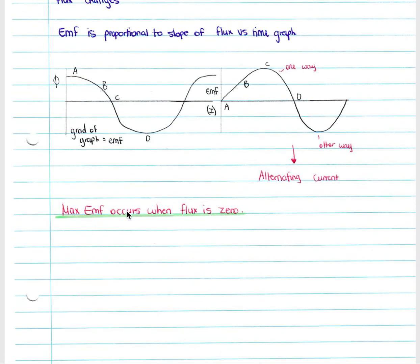It is important to note that maximum EMF occurs when flux is zero. At point c, flux is zero but EMF is at a maximum. You will often be asked when EMF is maximum — the answer is when magnetic flux through the coil is zero, because that is when you get the maximum rate of change of magnetic flux.